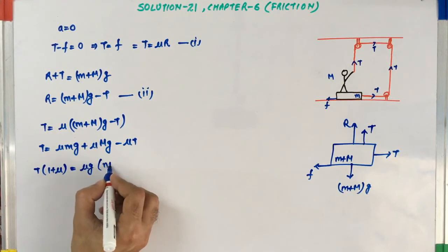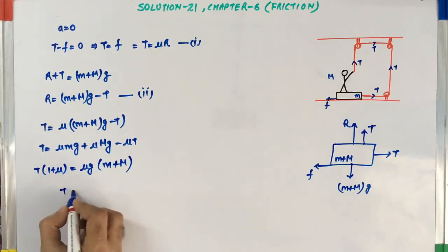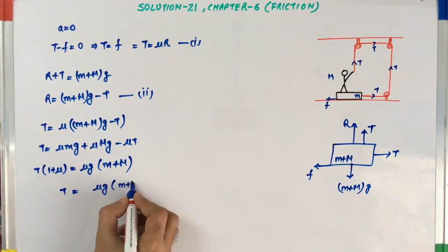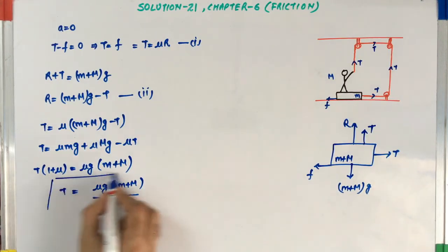Now the value of T is mu G times M plus M upon 1 plus mu. So this is the maximum force which a man can apply so that the block will not move. This is the solution of this problem.